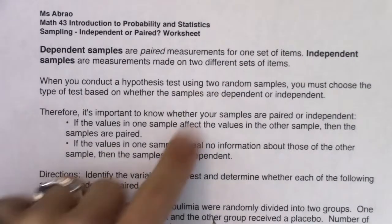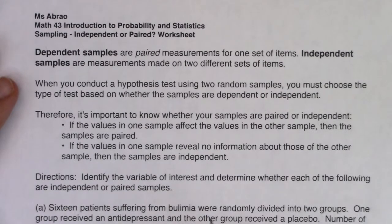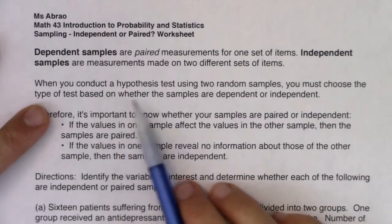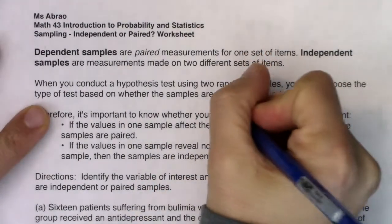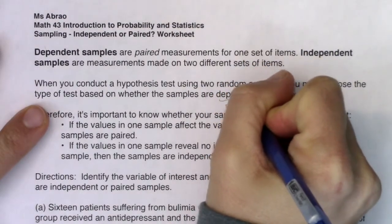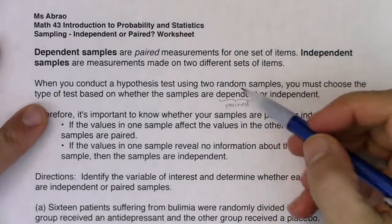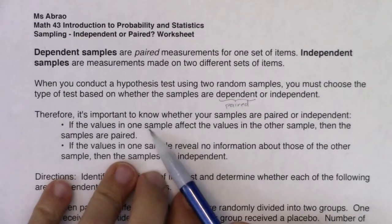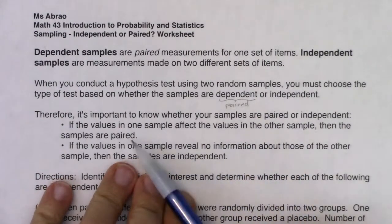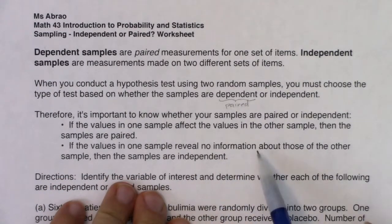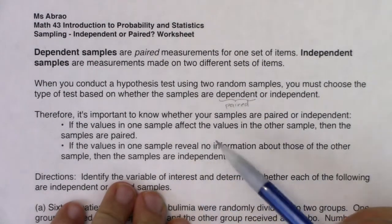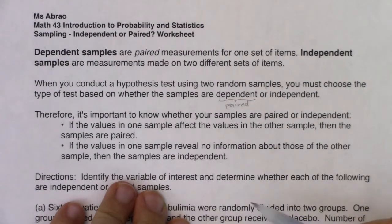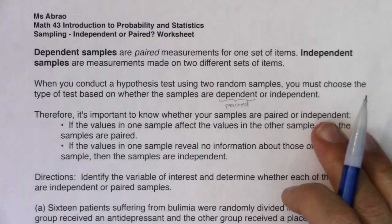When you conduct a hypothesis test using two random samples or two randomly assigned treatments, you must choose the type of test based on whether the samples are dependent or independent. The terms 'dependent' and 'paired' are interchangeable. If the values of one sample affect the values in the other sample, the samples are paired. If values in one sample reveal no information about the other sample, then the samples are independent.